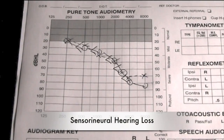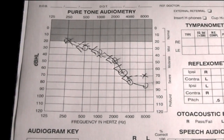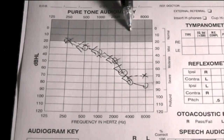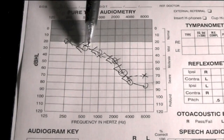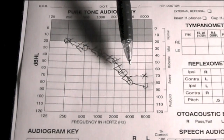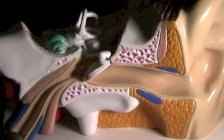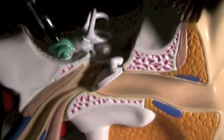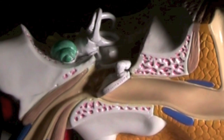On this audiogram, the person has a sensorineural hearing loss. Again, we can see the response to sound needs to be louder than it should be, but the little marks are all lined together. When someone has a sensorineural hearing loss, the damage occurs in the cochlea directly and the nerve that goes through to the brain.